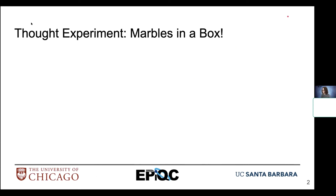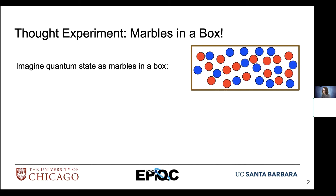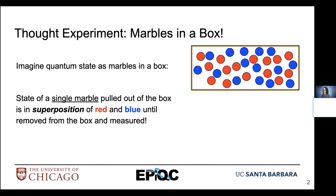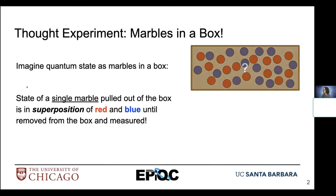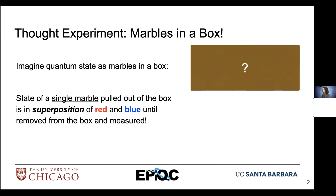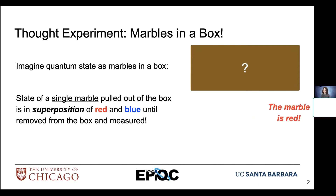Let's start with a thought experiment. Think about some marbles in a box — we have quantum state that we're going to picture as a bunch of marbles in a box. In this box, we have red marbles and blue marbles. We consider the state of a single marble pulled out as a superposition of both red and blue; we don't know the color until we take it out and measure it. Our measurement device will be our visual observation of the color of that ball. We could pull out a blue marble or a red marble.